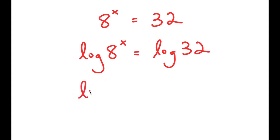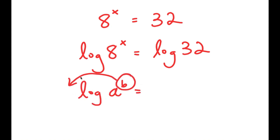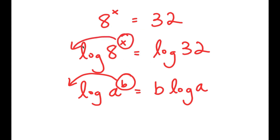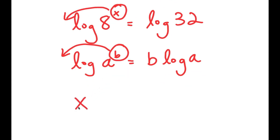Now, if I have something in the form log of a to the power of b, I can move b to the front of the logarithm, so this turns into b times log a. So in the case of log 8 to the power of x, we can think of x as b and move x to the front. So I get x times log of 8 is equal to log of 32.